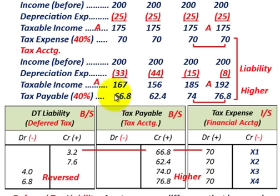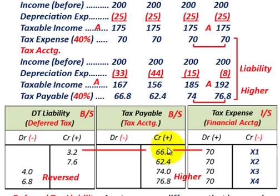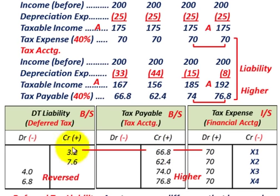Tax payable comes from our tax accounting calculations. Year one is $66,800; year two is $62,400; year three is $74,000; year four is $76,800. For the deferred tax liability, we look at the difference between tax payable and tax expense. In year X1: $70,000 debit for tax expense versus $66,800 credit for tax payable — so we credit the deferred tax liability for $3,200.